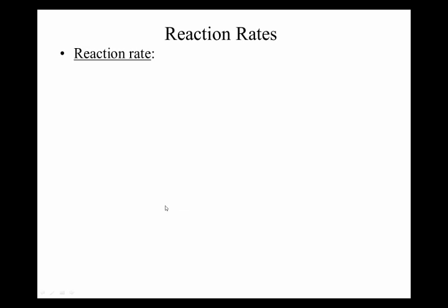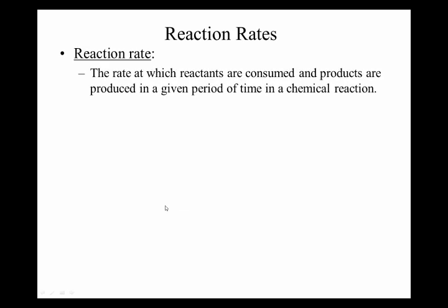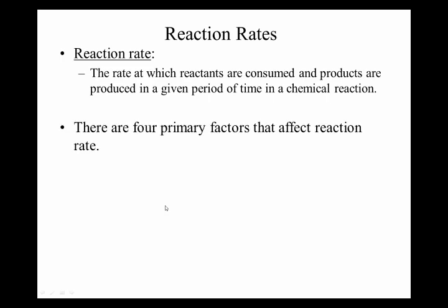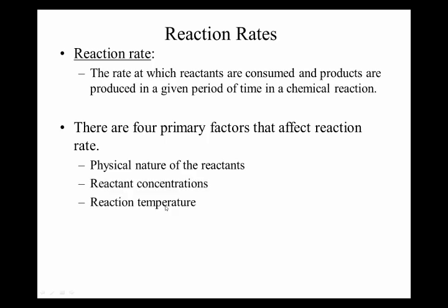The reaction rate is just the rate at which the reactants are consumed and the products are produced in a given period of time. There's four primary things that affect rate. We're not going to calculate reaction rates or do anything like that. What we're going to do is just look at qualitatively the four primary factors that affect rate. And so they are the physical nature of the reactants, reactant concentrations, temperature, and presence of a catalyst. We'll talk about all those individually.